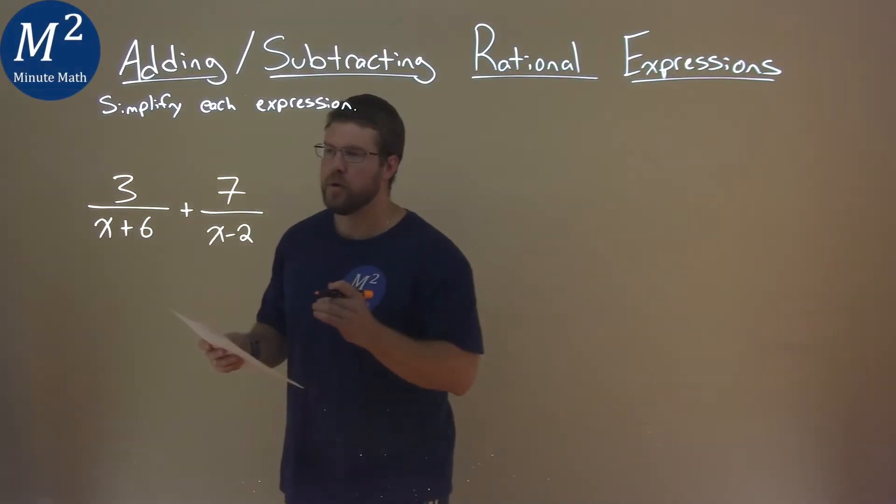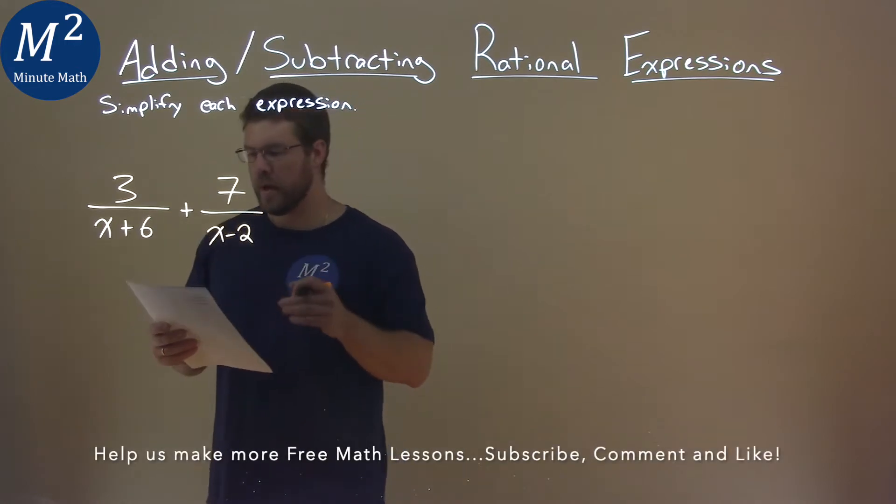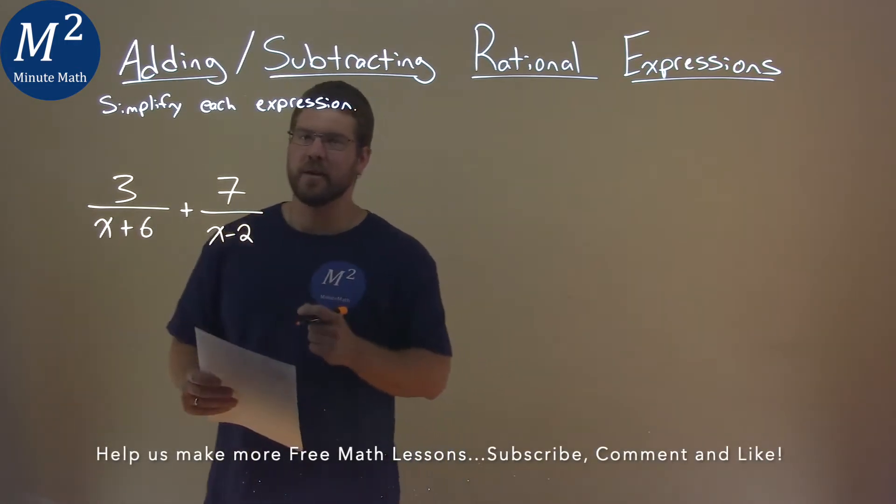We're given this problem right here, 3 over x plus 6 plus 7 over x minus 2, and we need to simplify this expression.